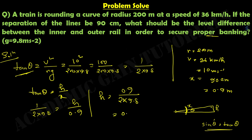We know the value of tan θ equals 1 divided by 2 into 9.8, and x equals 0.9 meter. So h equals 0.9 divided by 2 into 9.8, which equals 0.046 meter, or we can write this as 4.6 centimeter.